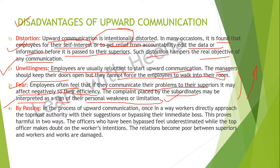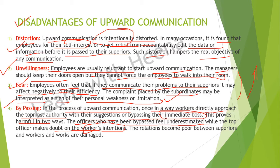The next disadvantage is bypassing. In the process of upward communication, workers sometimes directly approach the topmost authority with their suggestions, bypassing their immediate boss. This proves harmful in two ways: the officer who has been bypassed feels underestimated, and the top officer makes doubts on the worker's intention. As a result, the relationship between superior and subordinate becomes poor and even the work is damaged.